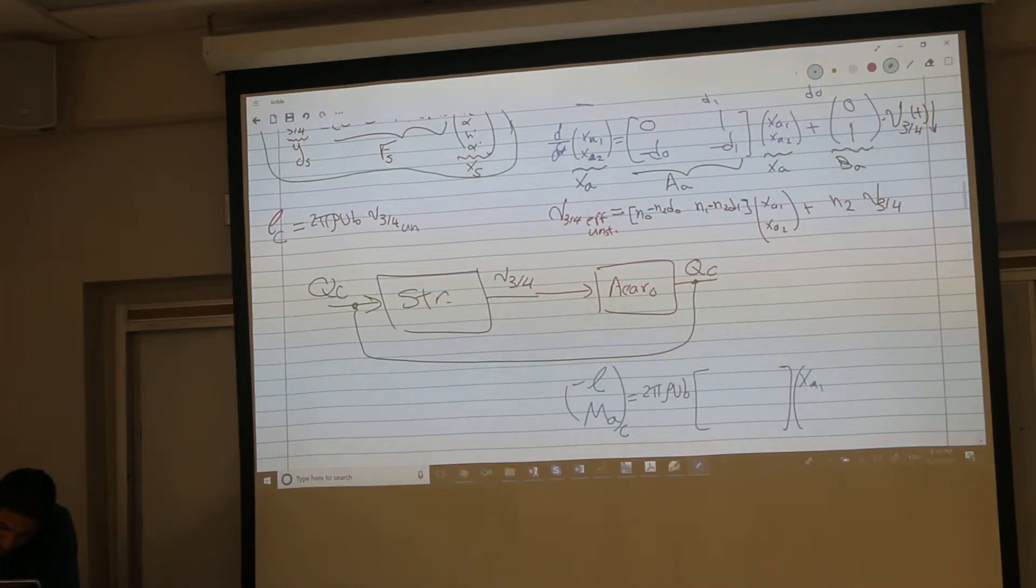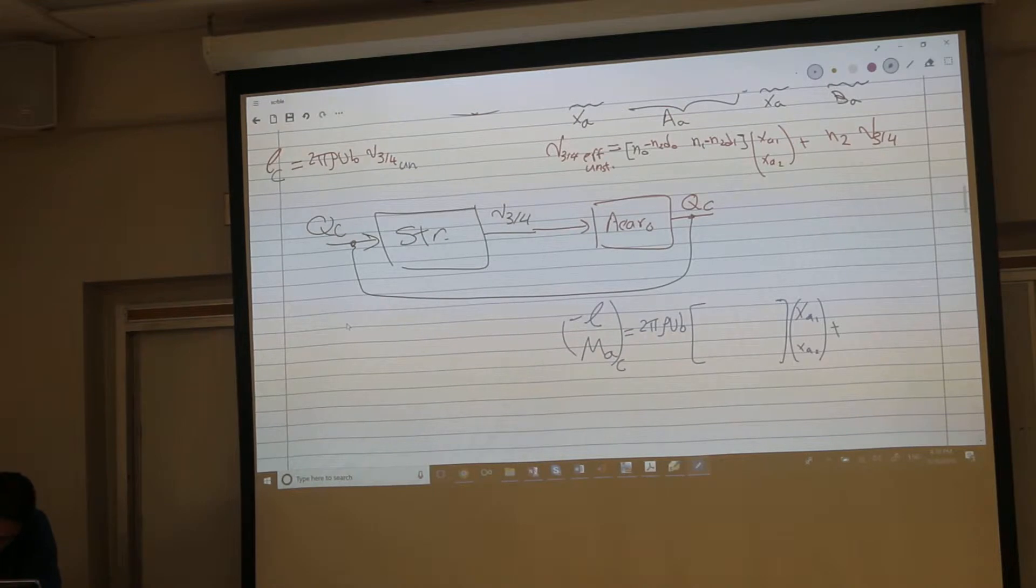Let's fill in these matrices. The left is 2 by rho uB times the v3 quarter unsteady, which is here, but I need them in negatives. I'll have the negative here actually and I'll copy them as is.